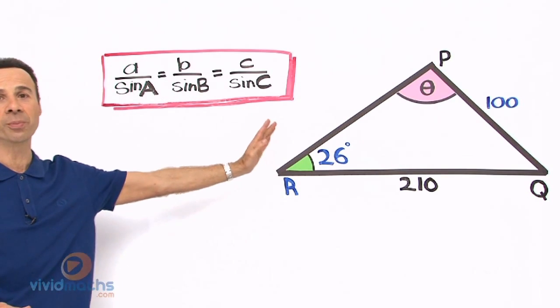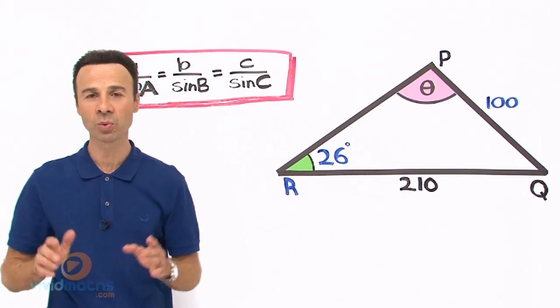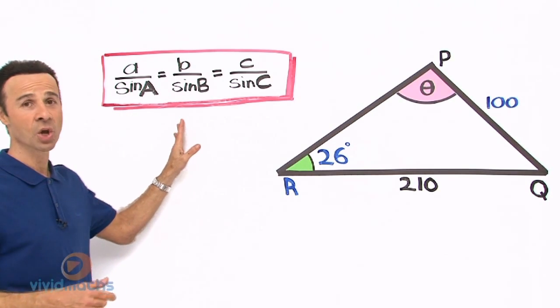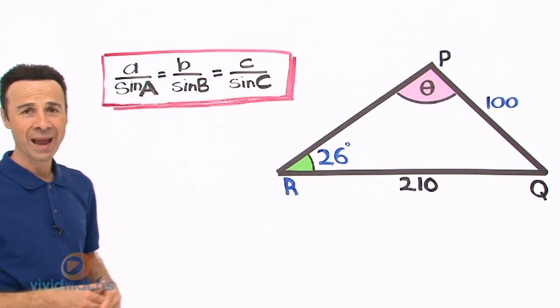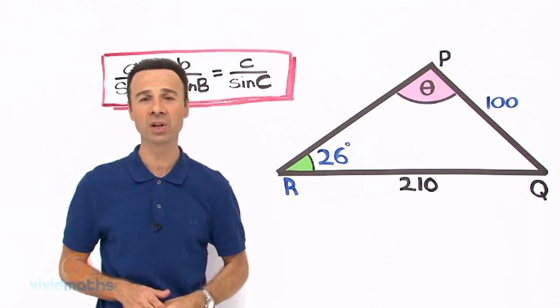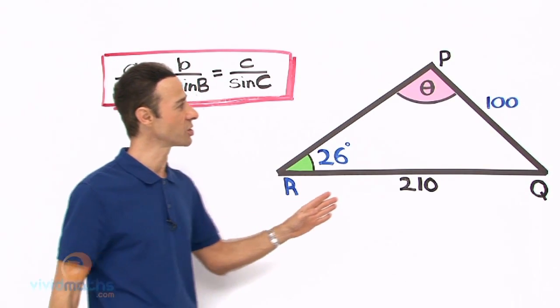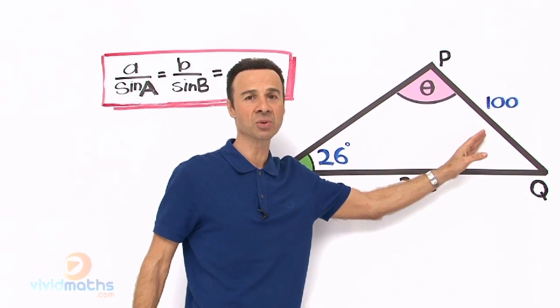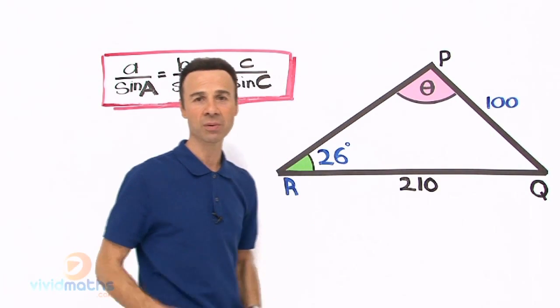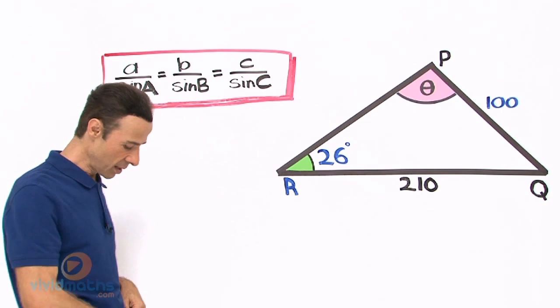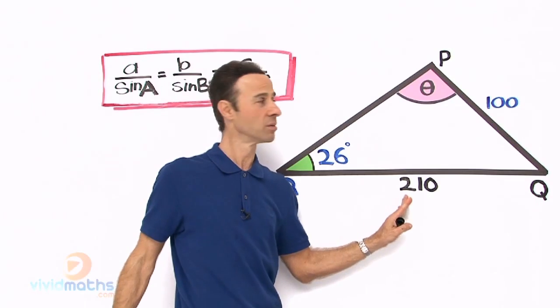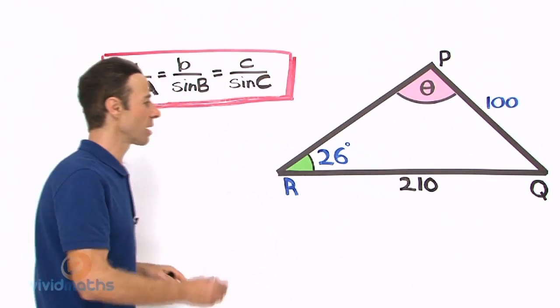This is the sine rule formula equation whatever you want to call it and I am going to give you a little quick shortcut on how to do this without having to refer to the sine rule all the time. Since we know it is all about cross multiplication what we are going to do is just go angle and distance, angle and distance and put distance over the angle. That is all we are doing, cross multiply. Let us do that now so let us start off with distance over angle.